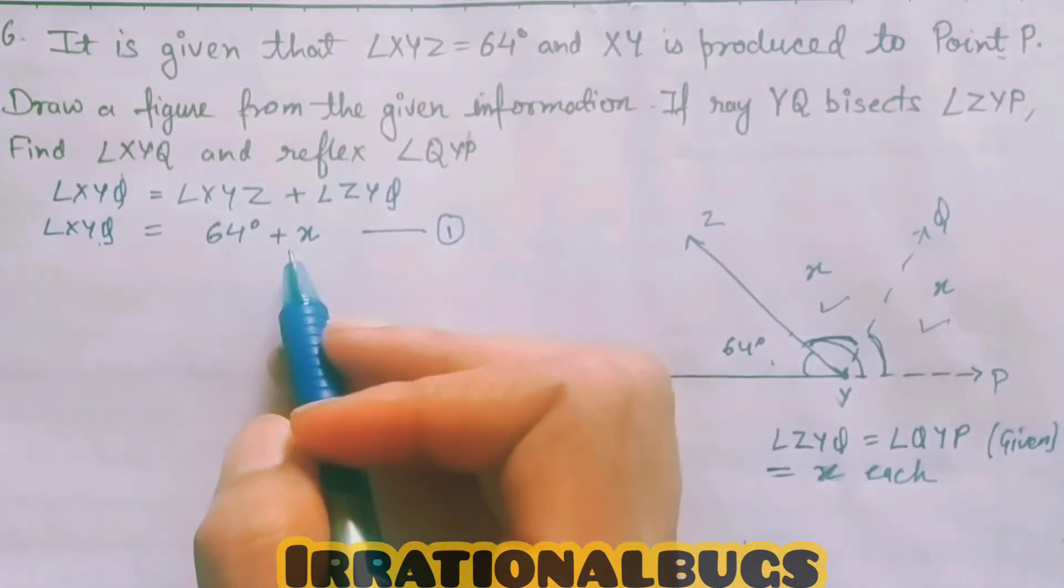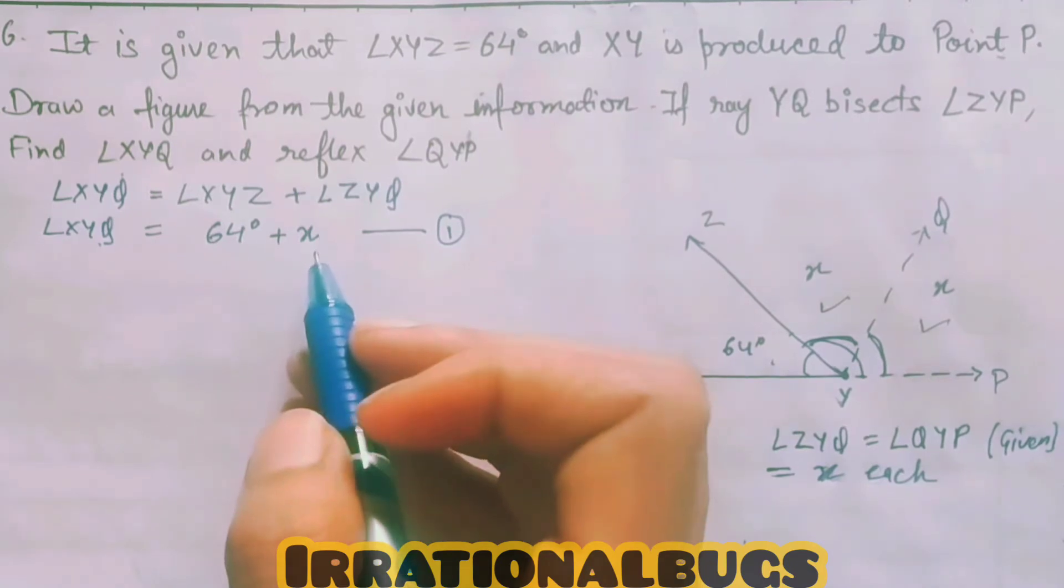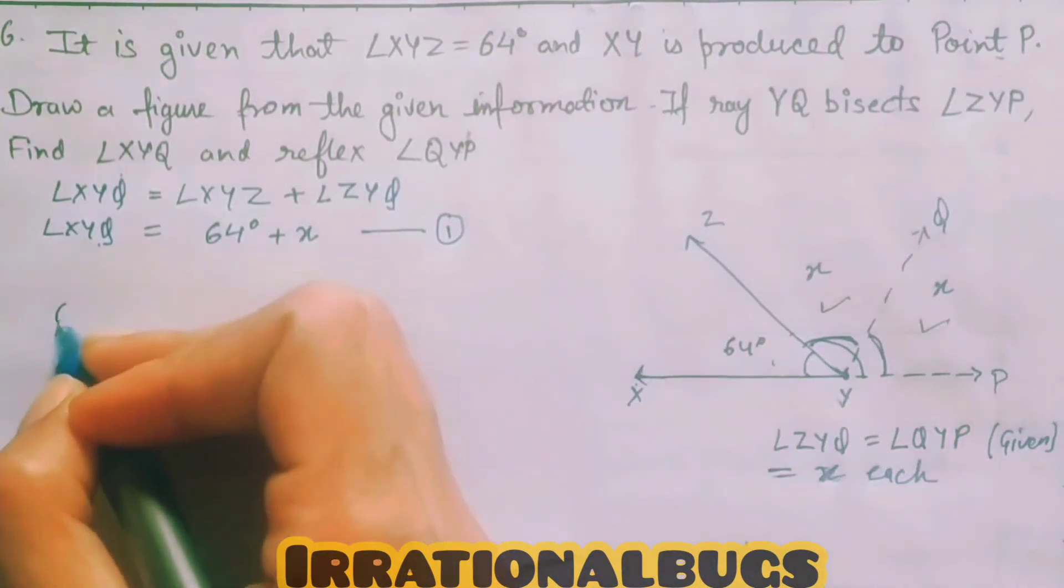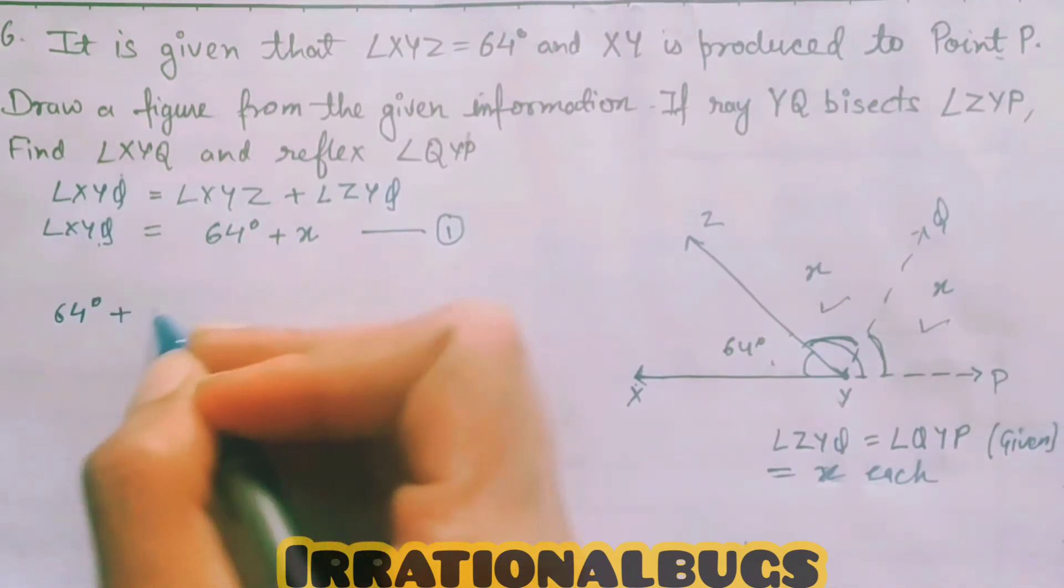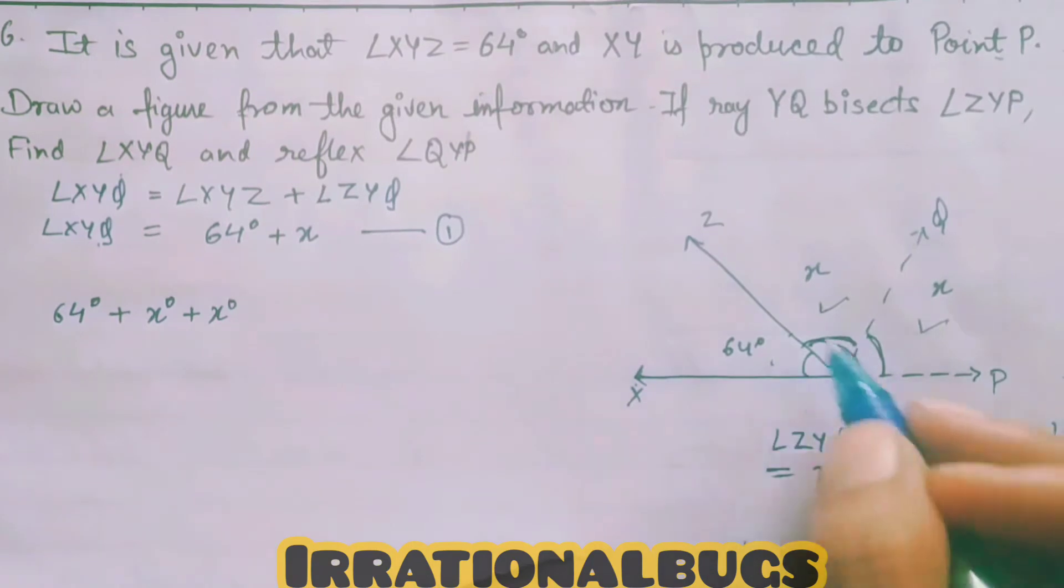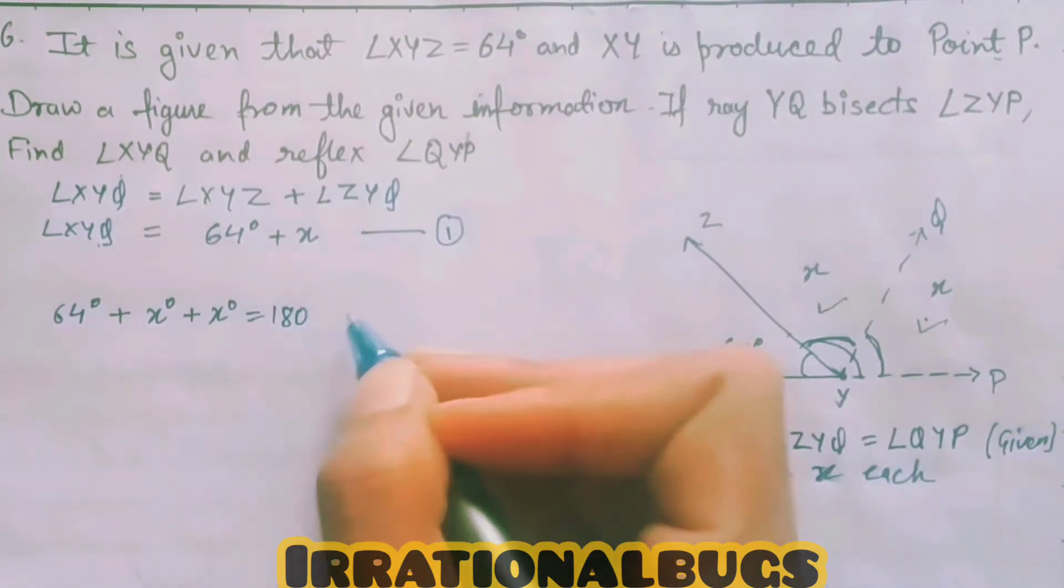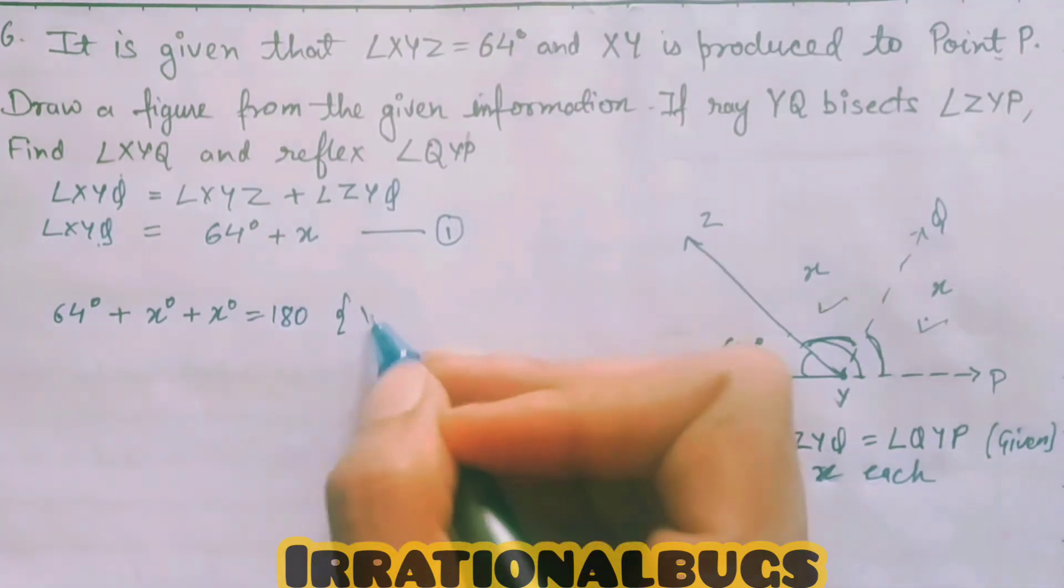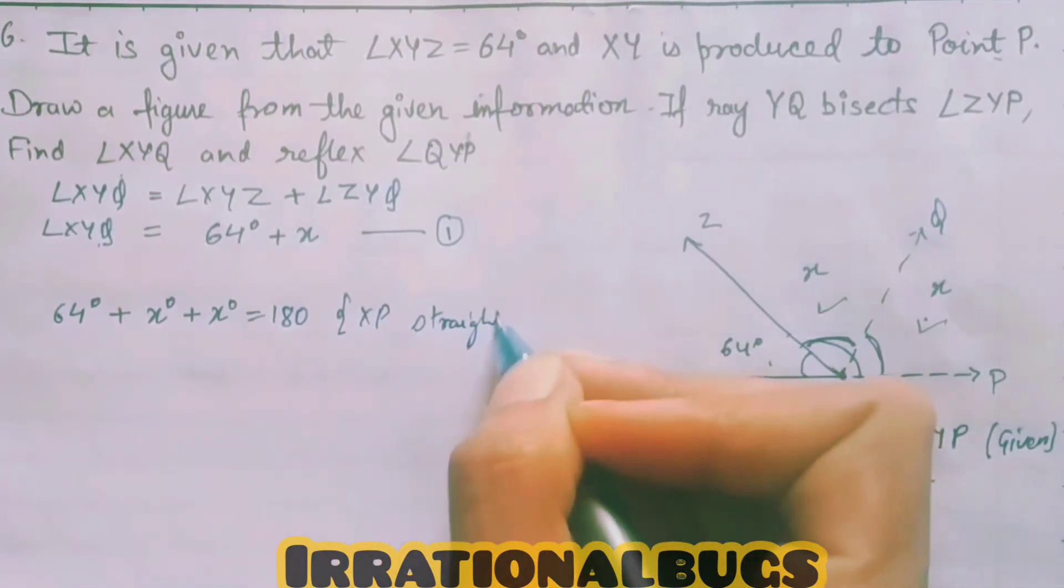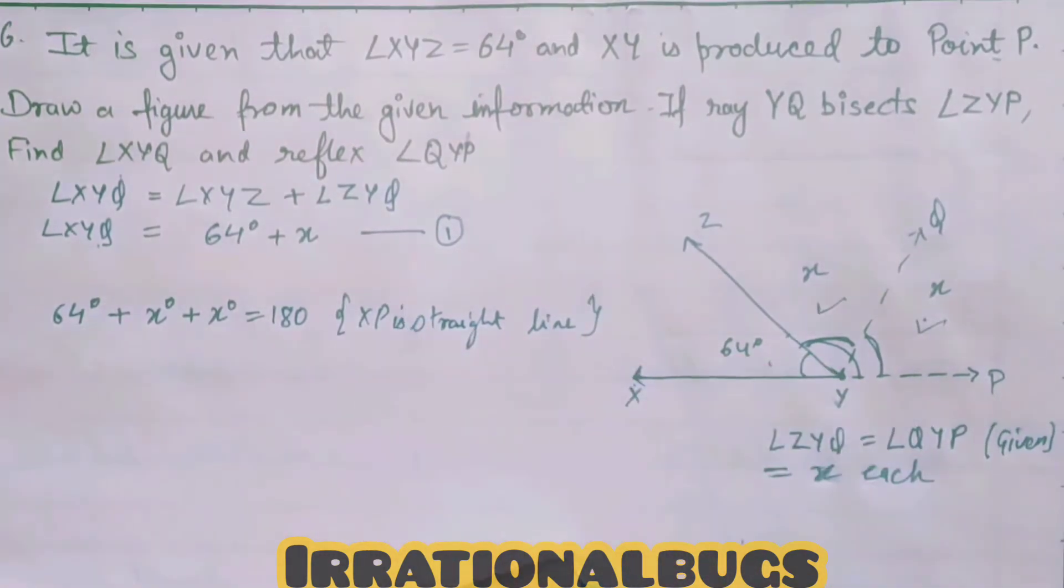Now, if there are two things unknown, then this question will not be solved further. That means, we have to find the value of X. So, I take this straight line XP. I can say that 64 degrees plus X degrees plus X degrees equal 180 degrees. Why did I take this? I use the straight line property. XP is a straight line. Straight line is equal to 180 degrees.